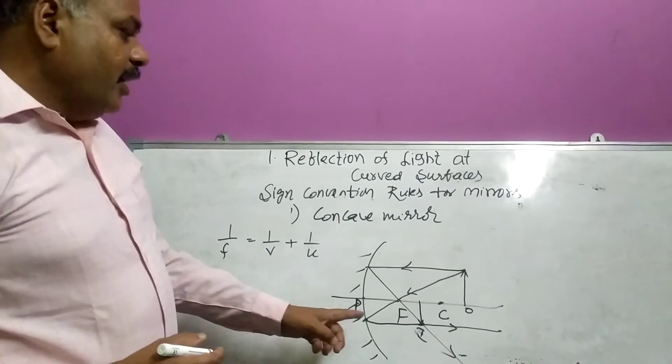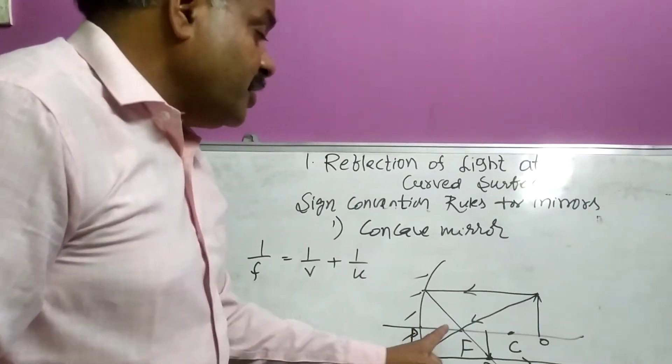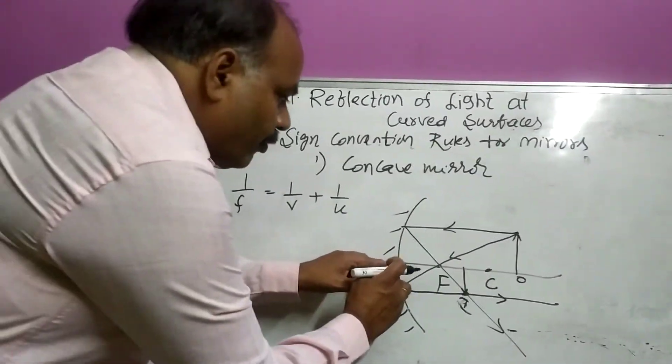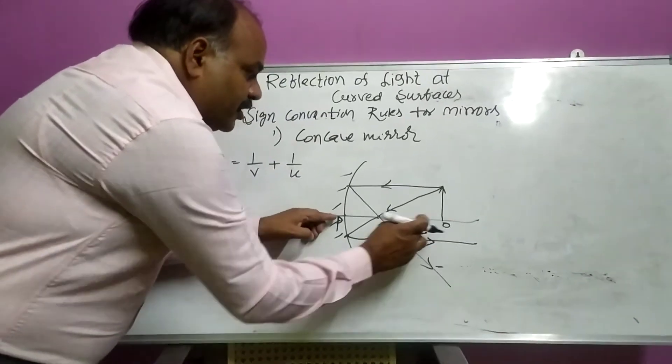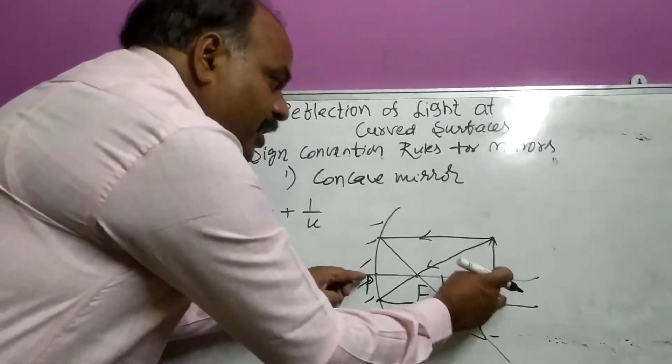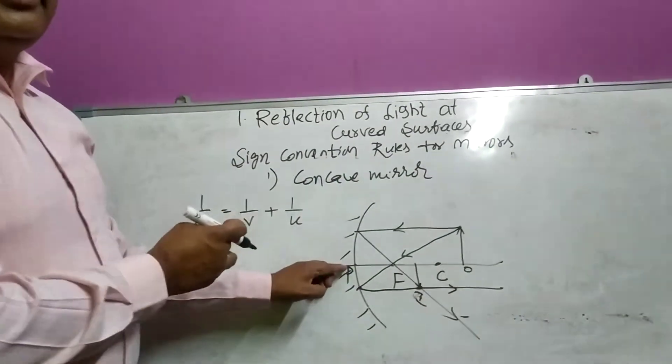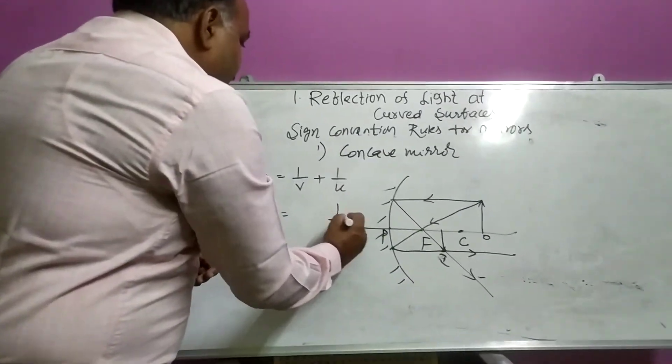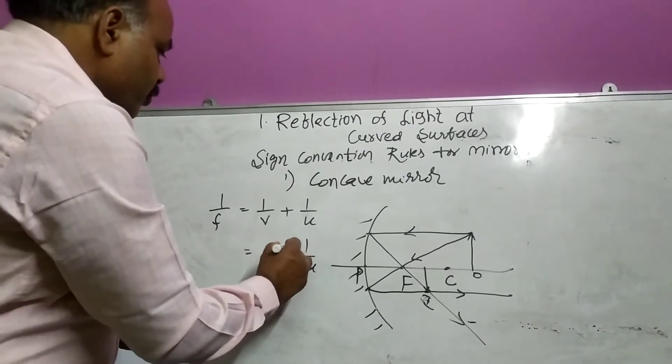Object distance means, object is here, from pole we are measuring. Object distance, this is object distance. Object distance we are taking in this direction, incident ray is in this direction. So, opposite direction. Opposite direction means, it will be taken as minus, 1 by minus U.